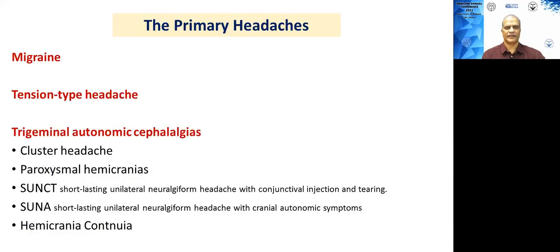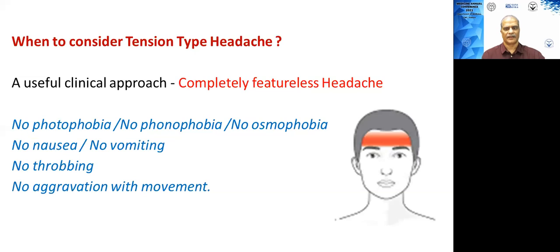Coming to each of these primary headaches in detail, we will first look at tension type headache because this is the commonest primary headache seen in clinical practice. A useful clinical approach is that these are completely featureless headaches — the patient will just have a dull aching pain all over the head, bilateral, with no nausea, no vomiting, and no throbbing or pulsatile quality. The patient may not have any aggravating factors.